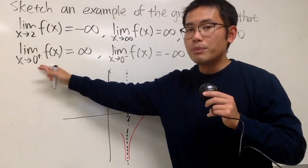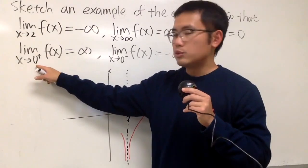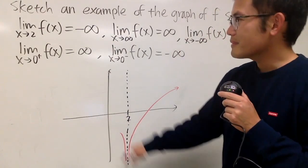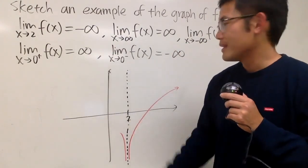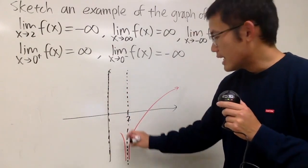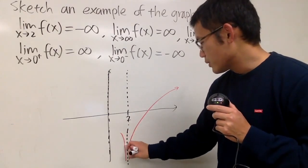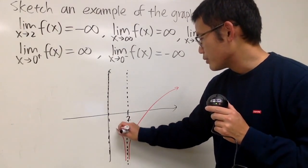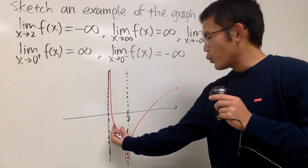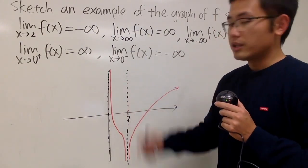Here we have 0 plus and 0 minus to look at. When we have the limit as x approaching 0 plus — this is approaching 0 from the right — we will end up with positive infinity. We will have a vertical asymptote right here again. This is like a tangent function. You have to make sure you go up to infinity like this. I don't know exactly where it starts curving up because I don't have enough information, but this right here is good enough.